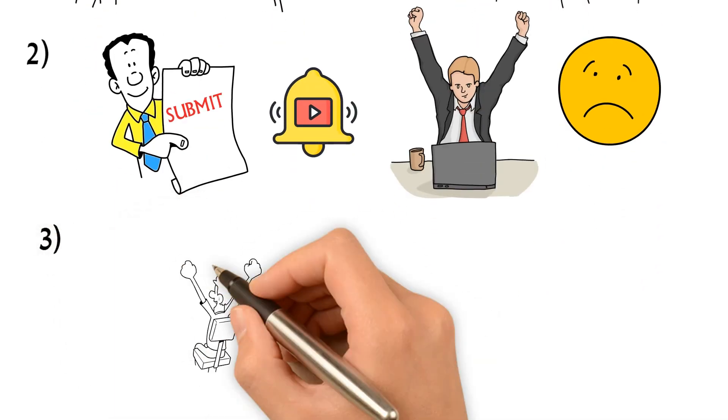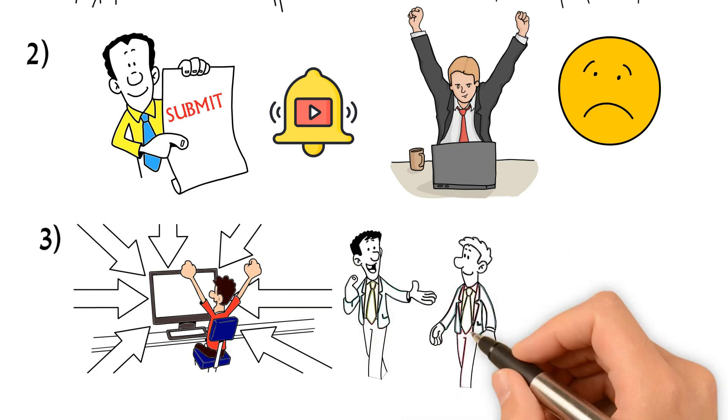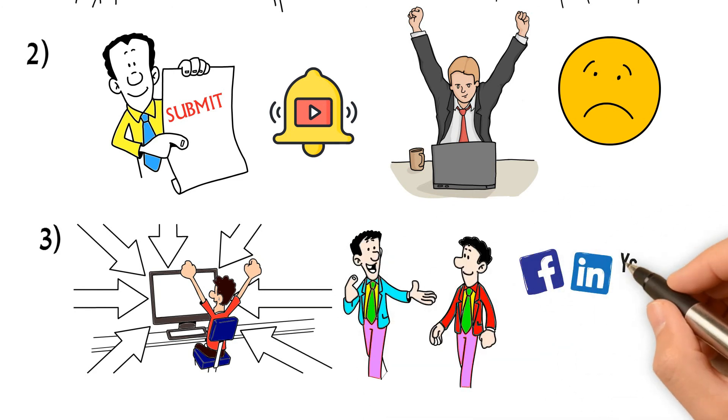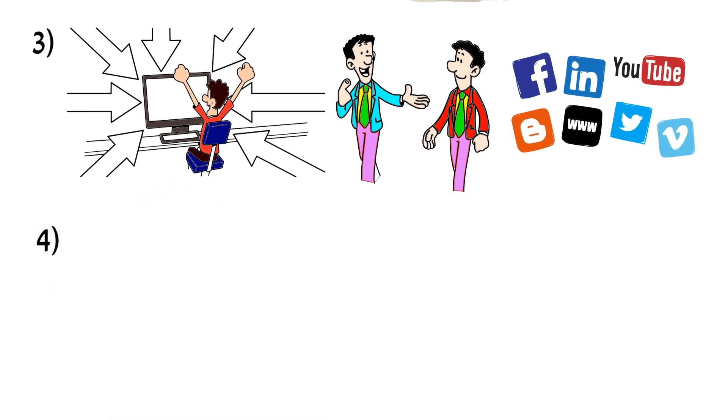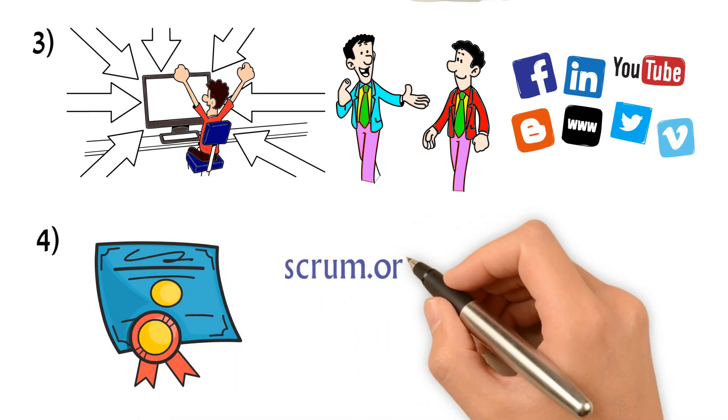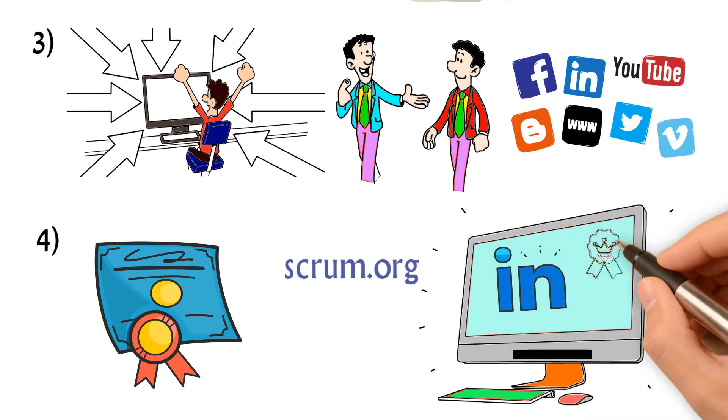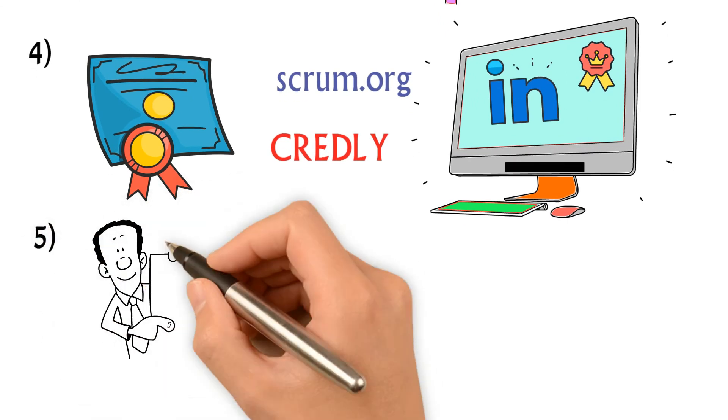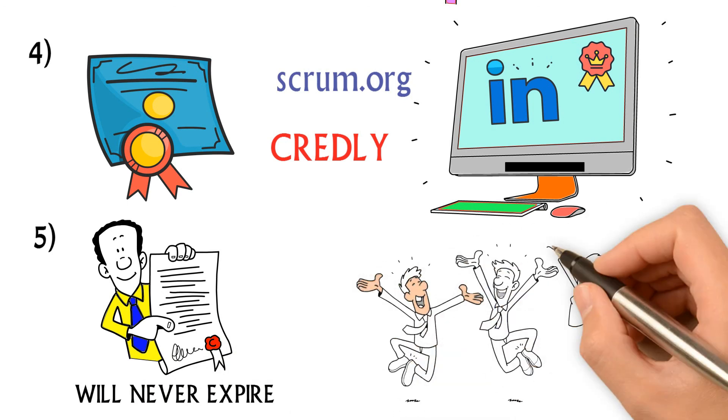If you pass the exam, which I think you will, you can start to share your accomplishments with your friends and colleagues through social medias like LinkedIn. You should be able to download your certificate from Scrum.org in your account. Also, you may update your LinkedIn profile with a digital badge issued by Credly. Remember, the PSM1 certification will never expire. Congratulations on your excellent accomplishment.